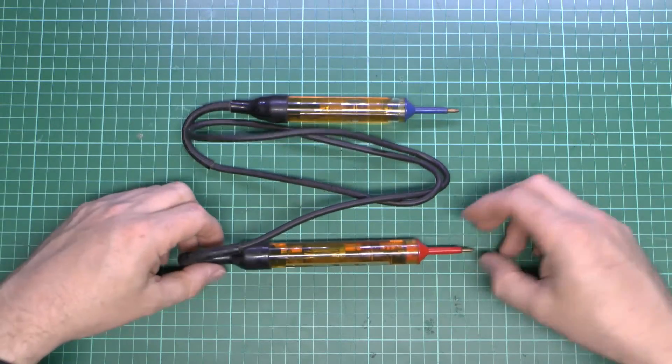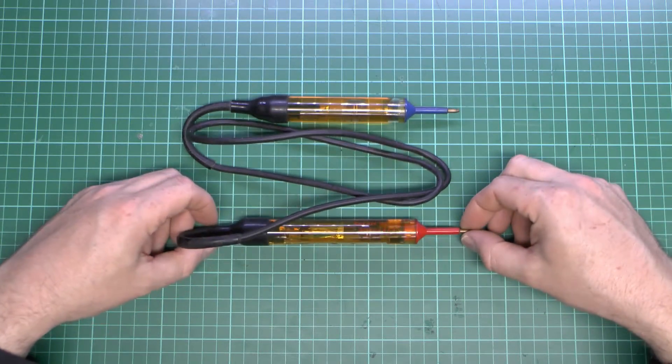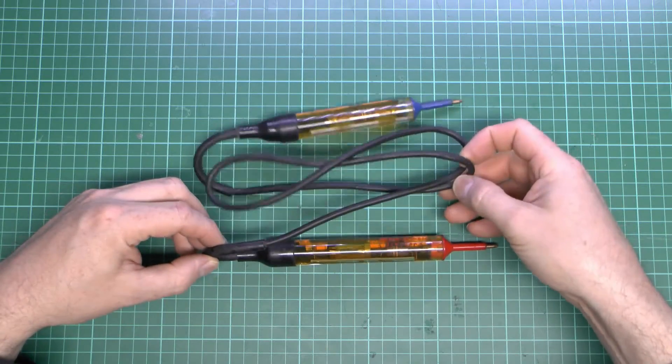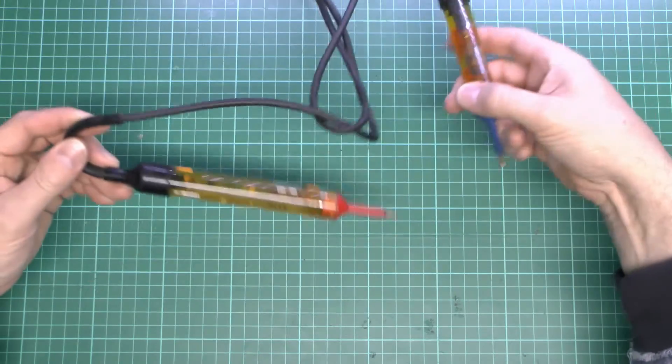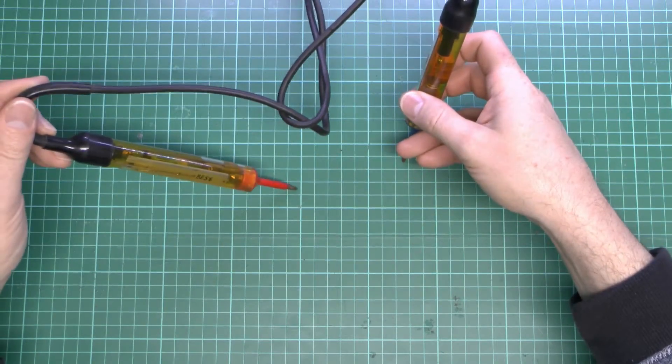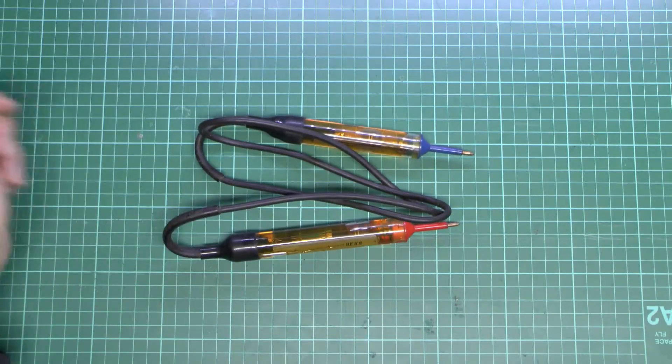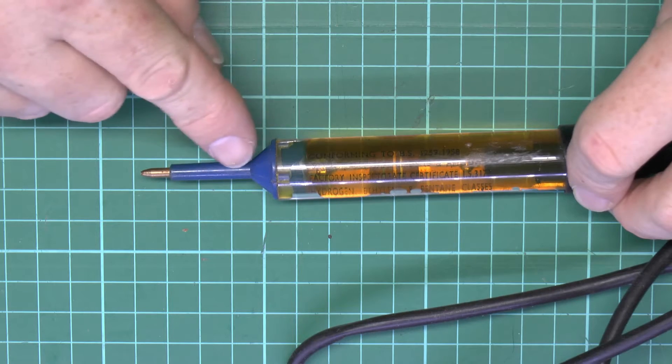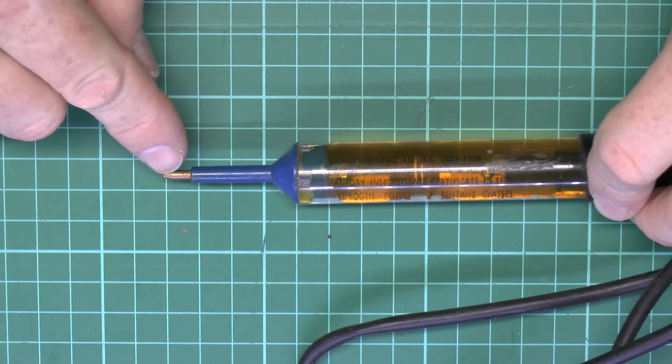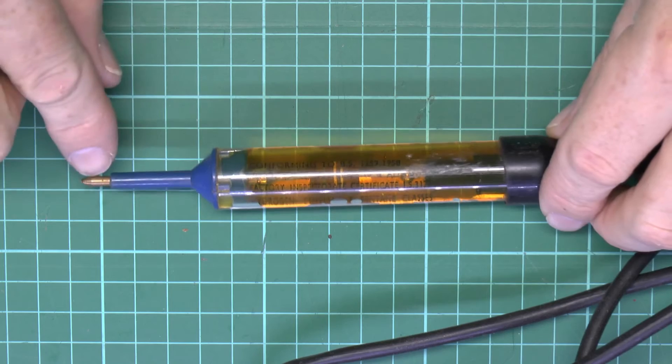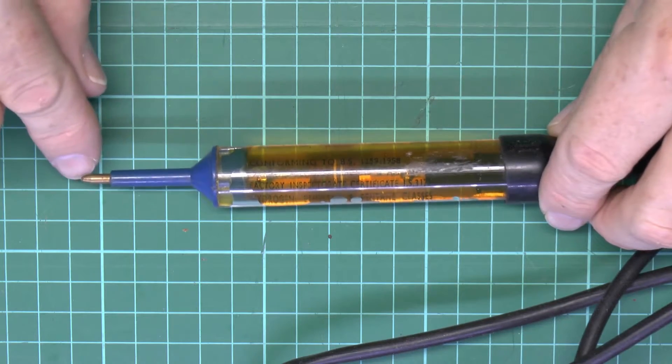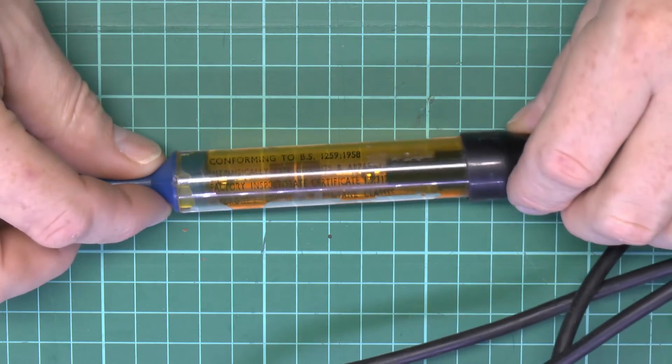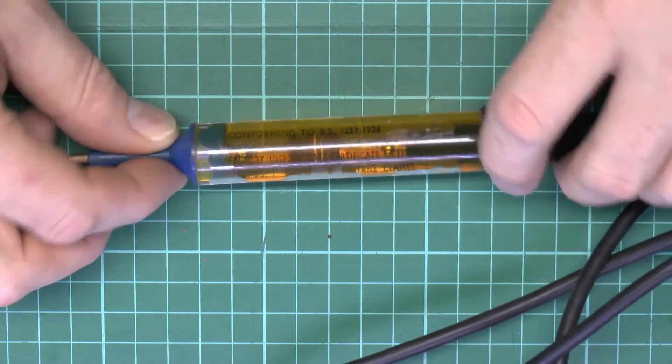We've got the two test probes here, one's colored red and one's blue, plastic body, and just the wire connecting between the two sides there. You would just place these on the two terminals and it would indicate if there was a voltage between. Both probes are very similar, you see it's got the insulated covering there with just that small section of metal at the end. That's actually too long for regulations today, but at the time that was probably perfectly acceptable.